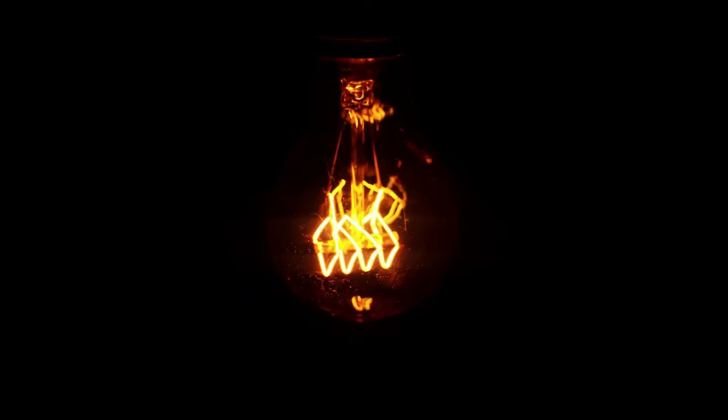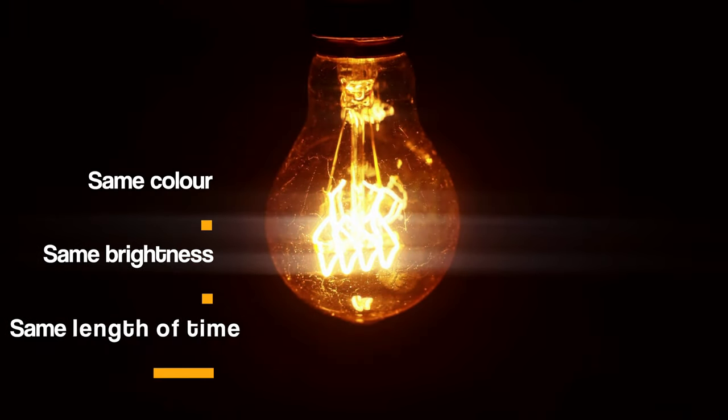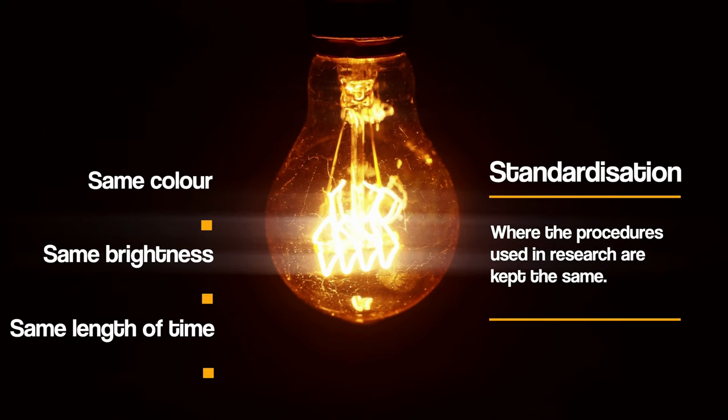Wundt carefully conducted the research in a highly controlled and systematic way to ensure that each sensory stimulus was presented in the same way each time to every participant. For example, in one experiment participants were asked to report on their sensations when shown a light. Wundt ensured that the light was kept the same colour, the same brightness, and on for the same length of time for each participant. By keeping these things standardised, it enabled Wundt to carefully compare responses for similarities and differences and to check the reliability of his results.